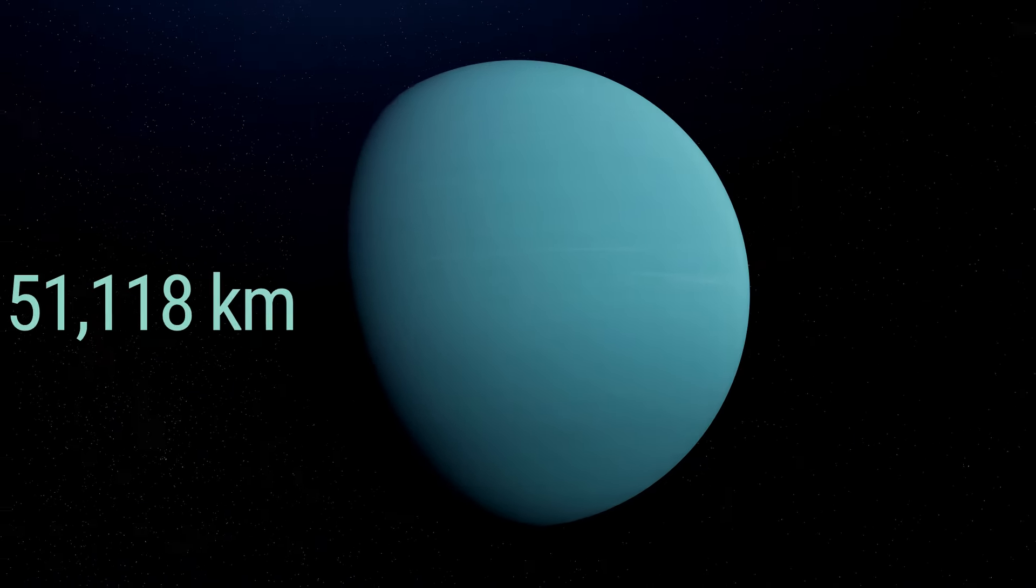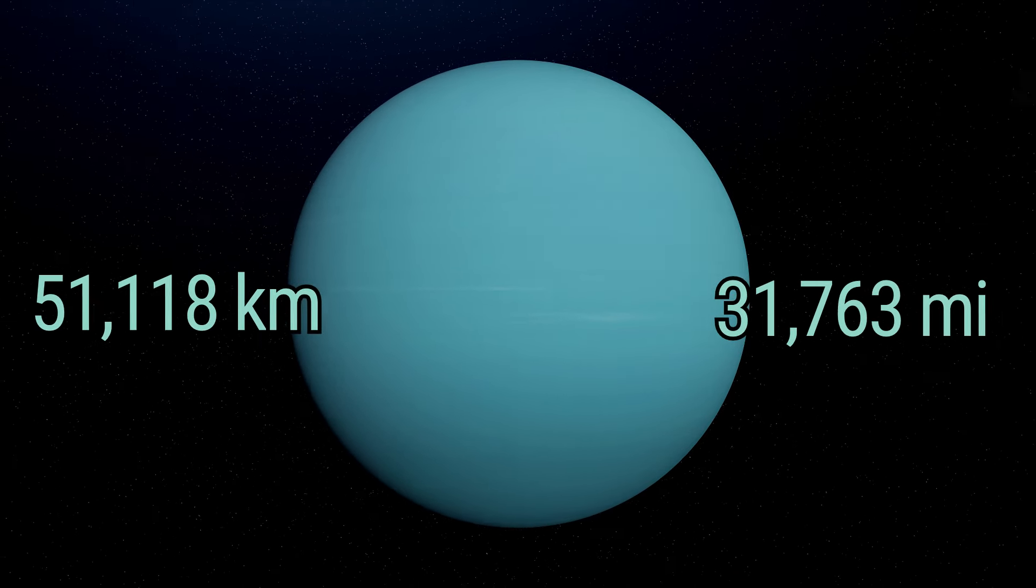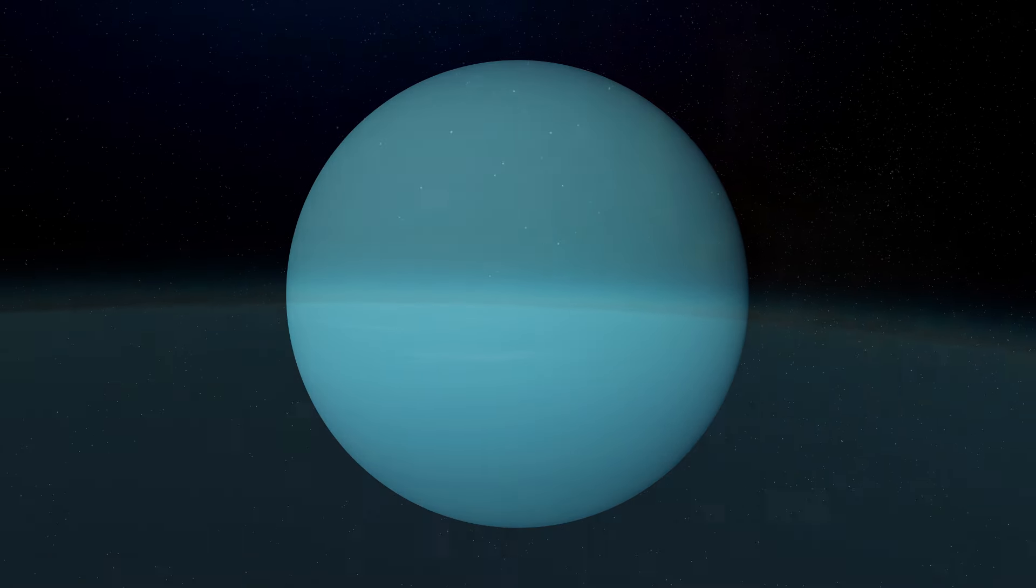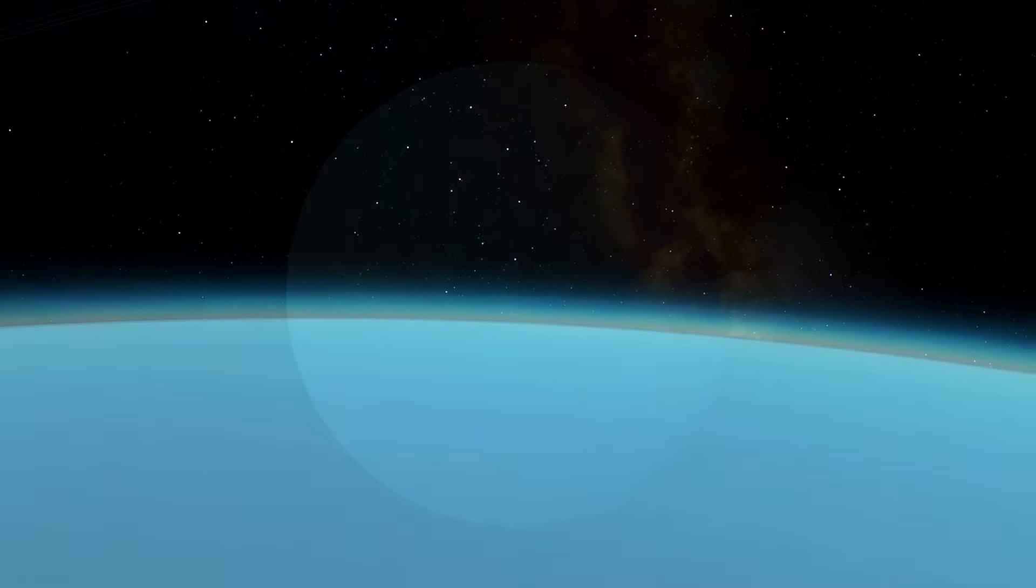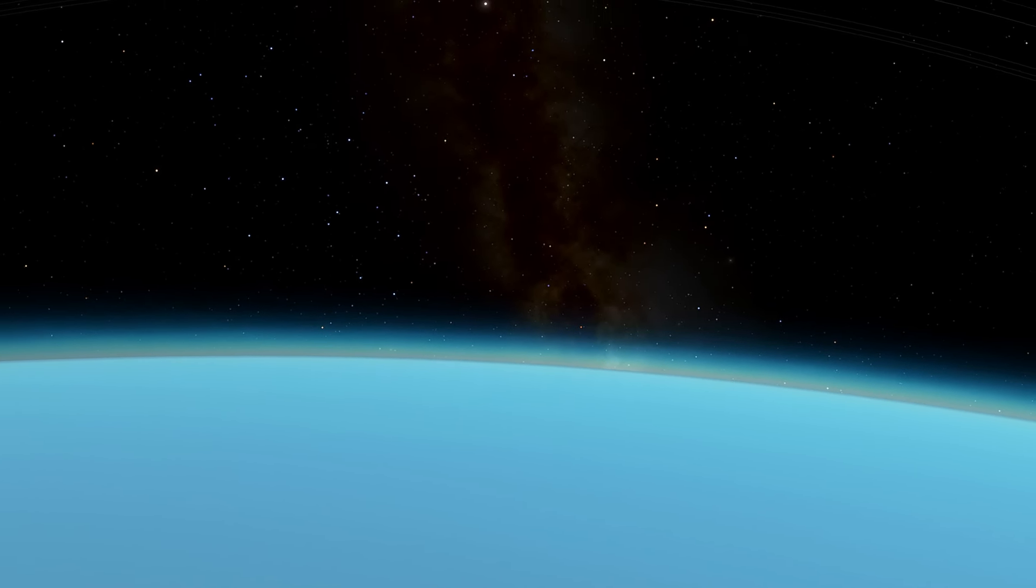Uranus measures 51,118 kilometers, or 31,763 miles, in diameter. Its atmosphere, laced with hydrogen, helium, and methane, gives it a pale blue hue.